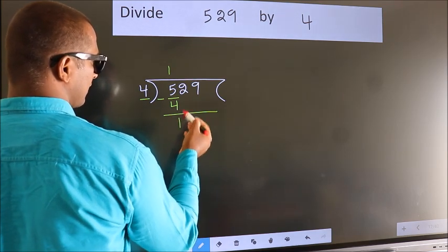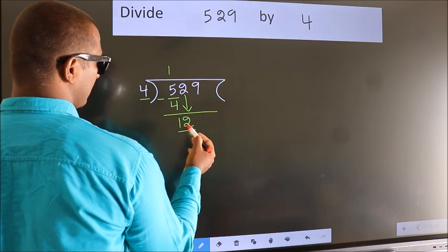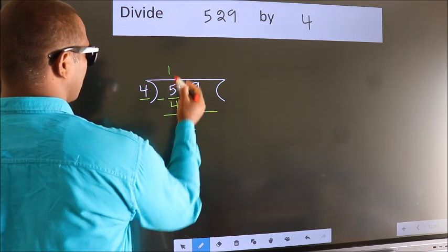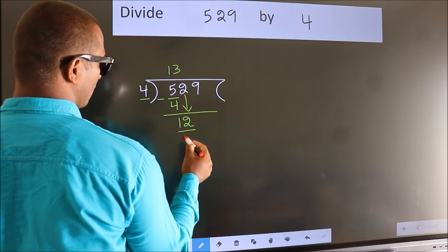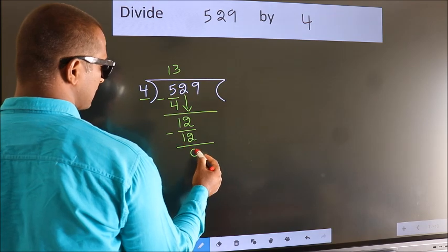After this, bring down the beside number. So, 2 down. So, 12. When do we get 12 in 4 table? 4 threes, 12. Now we subtract. We get 0.